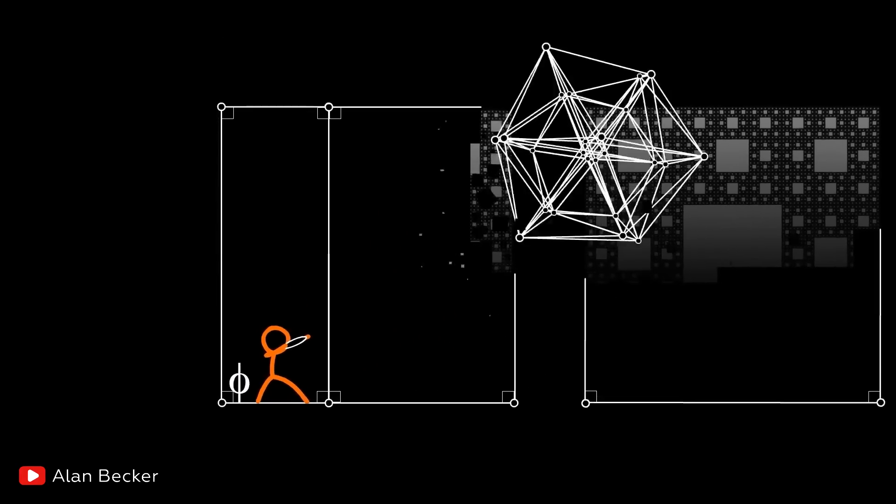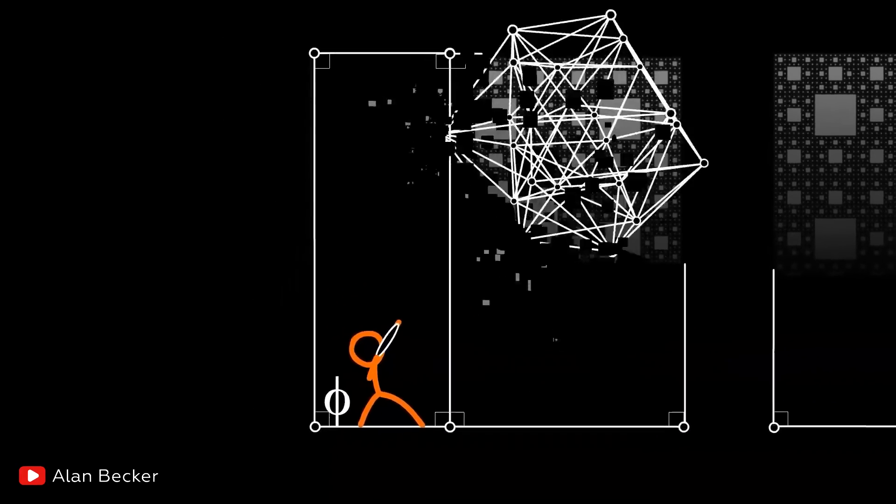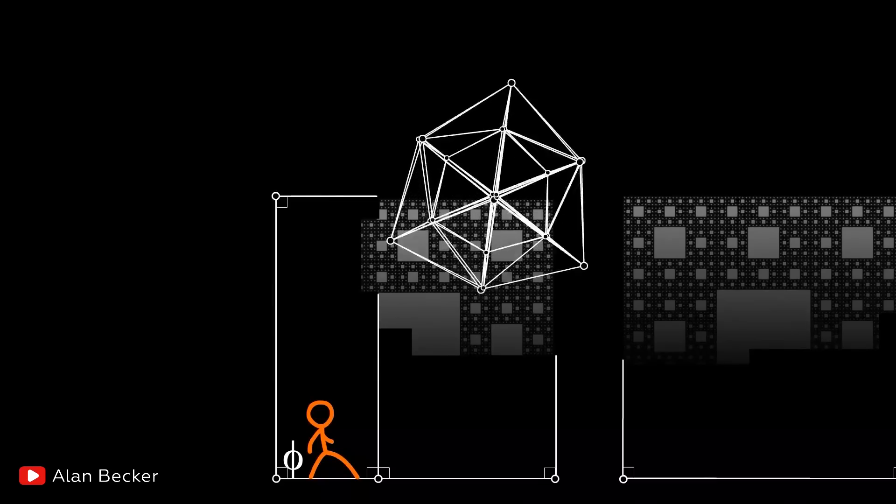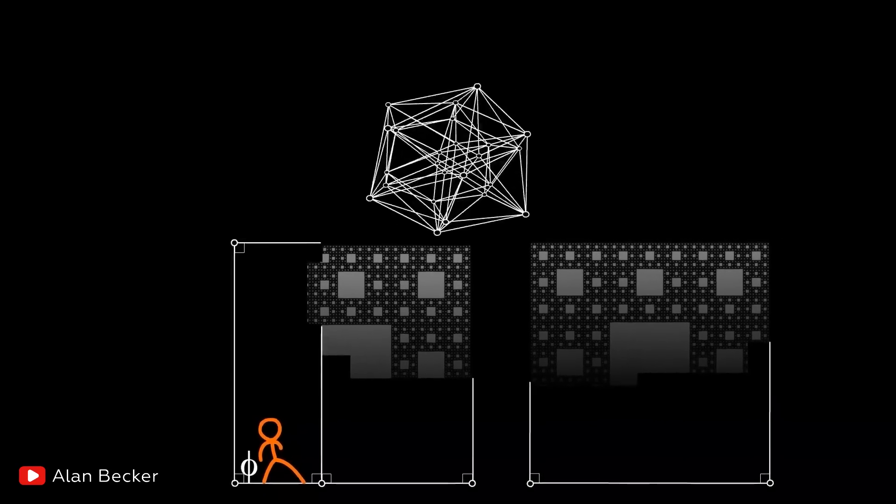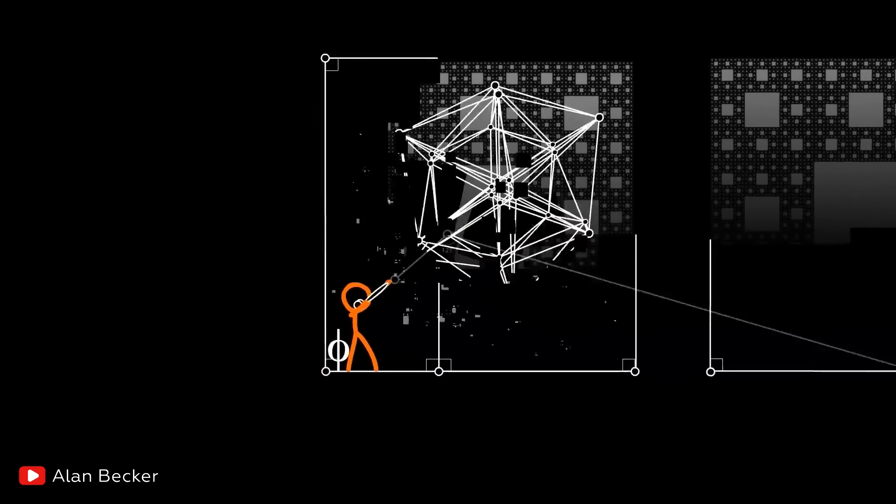With each blow, the Octaplex reveals the fractal essence of the figure, as if crushing its dimension. So hidden behind the square is the famous fractal, the Sierpinski carpet.